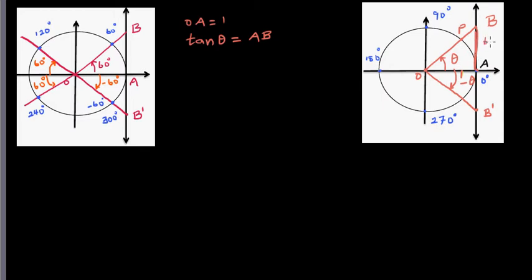So if that is the case, what is tan 0? When thinking about tan 0, we ask: what is the length of AB when the particle is at A? When the particle is at A, the angle it has moved is 0, so the length of AB is 0. That's why tan 0 = 0.